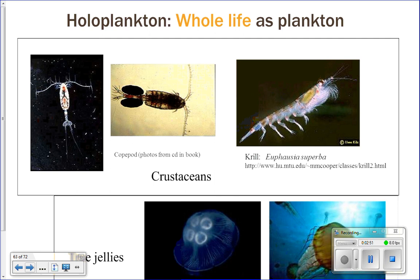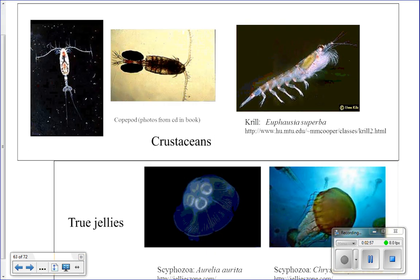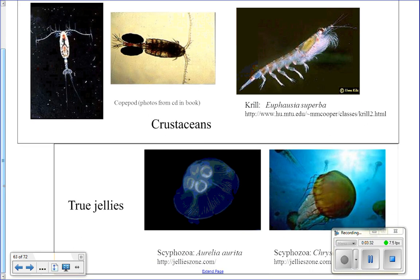Here are some different kinds of holoplankton. Crustaceans like krill and copepods are two of the most common types. Krill is what whales eat. True jellies are also holoplankton — these are organisms whose whole life is spent as plankton.